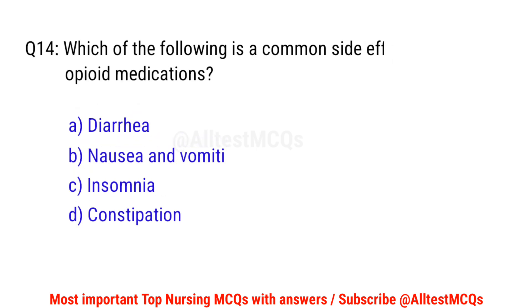Question number 14. Which of the following is a common side effect of opioid medications? The right option is D: Constipation.